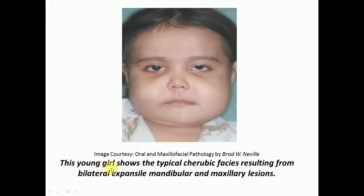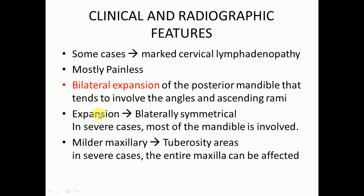Here you can see the image of a patient showing the typical cherubic face resulting from bilateral expansile mandibular and maxillary lesions. In some cases there can be marked cervical lymphadenopathy, mostly painless. Cherubism causes bilateral expansion of the posterior mandible, tending to involve the angle and ascending ramus, and those expansions are bilaterally symmetrical.